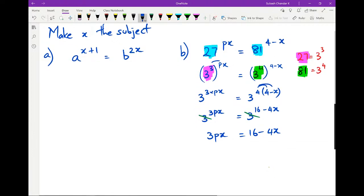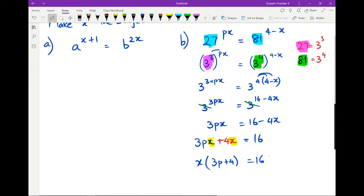And now, because we're trying to make x the subject, so what we're going to do is bring all the x's together. So we've got 3px plus 4x, and then that's equal to 16. So we want to make x the subject, so that means we want to actually have x by itself. And what you can see is that x is the common factor. So we actually take out x as a common factor. We're going to take it out, and what we have is 3p plus 4 equals 16. And then from there, we can now write x by itself, which is going to be 16 divided by 3p plus 4.